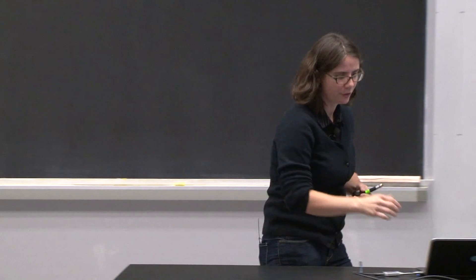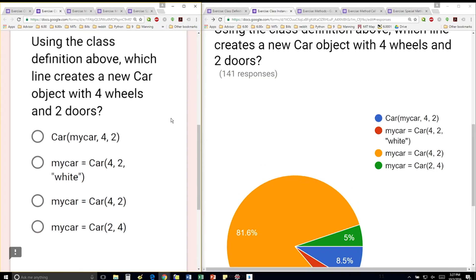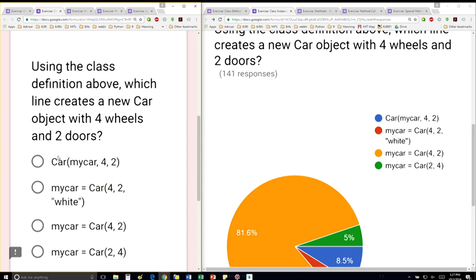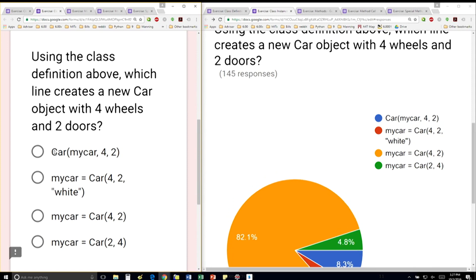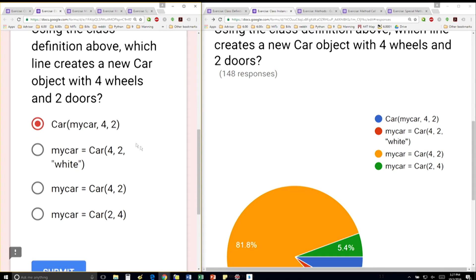The question says, using the class definition above, which line creates a new car object with four wheels and two doors? This first one is not right because it's trying to call the class with a variable, my car, for self, which isn't quite right.